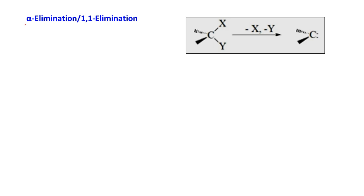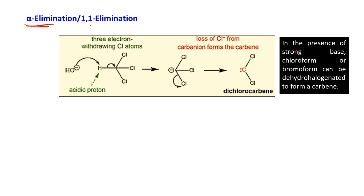Under elimination, the first reaction we discuss is alpha elimination, also called 1,1-elimination. It is named this way because the two groups or atoms that are removed are removed from the same carbon. This is distinct from 1,2-elimination, where X and Y are present on carbon 1 and carbon 2. Here both are removed from the same carbon, producing a carbene.